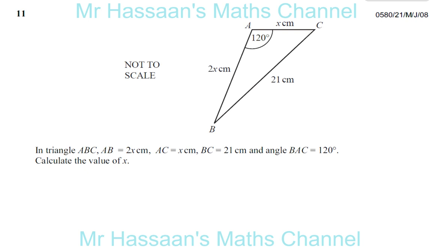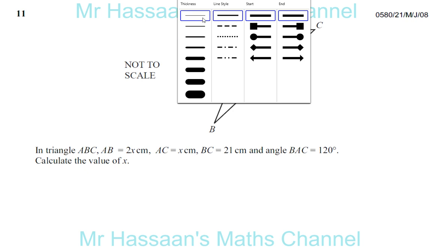Here we have question number 11 from summer 2008 Paper 2 variant 1, which involves a non-right angle triangle. They've told us in terms of x some of the lengths that are here, and they told us what the angles are. They told us one length as it is without x, and they told us to calculate the value of x.